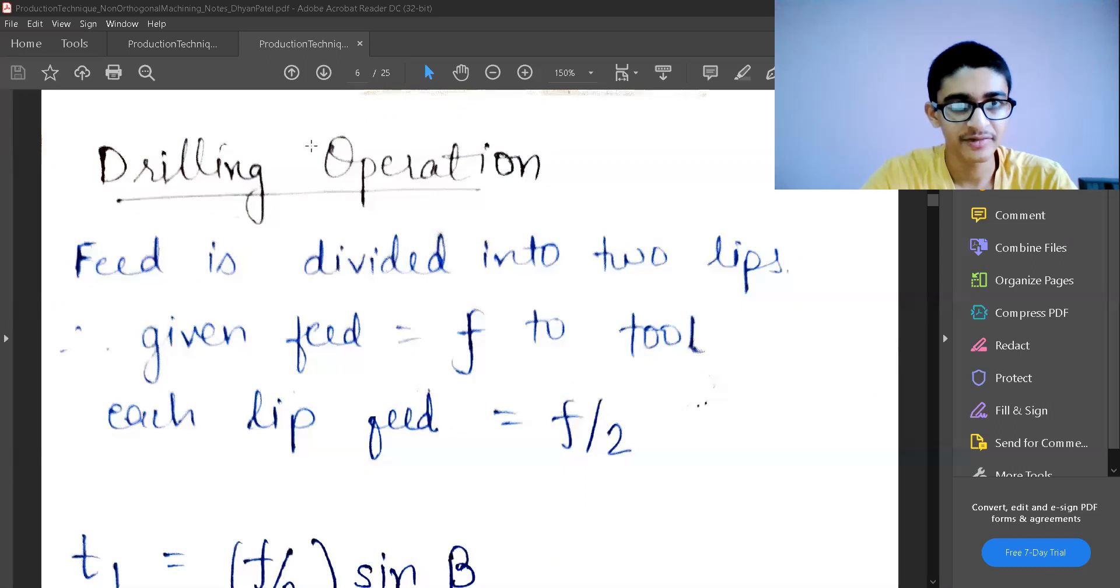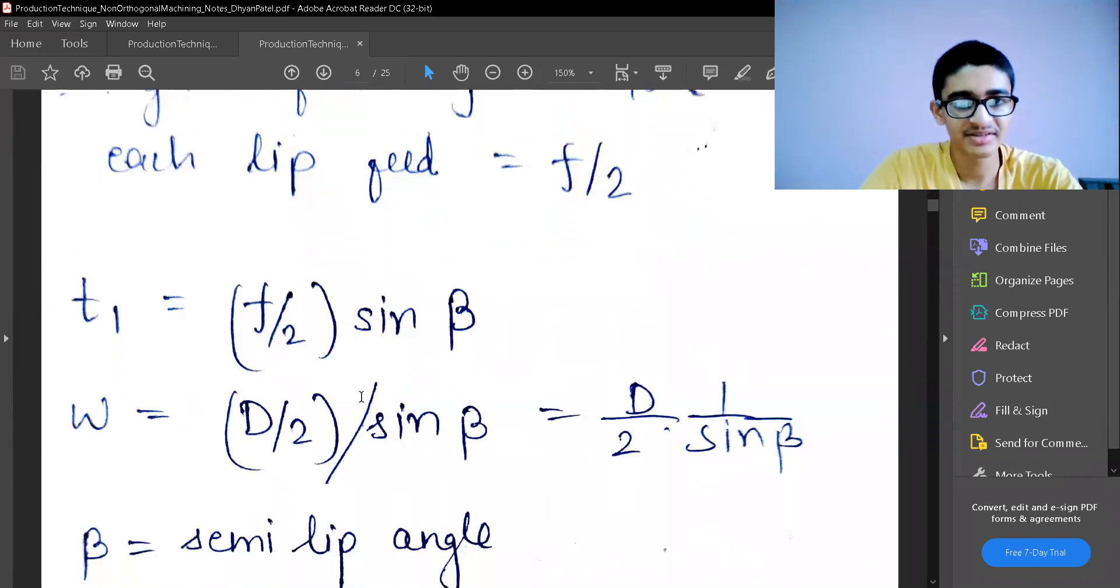That's the important change which is happening. All the other things will remain the same. Earlier we had t1, the uncut chip thickness is equal to f sine beta or cosine. The beta is defined as semi-lip angle. That is not the same as cutting edge angle or side cutting edge angle. We are using the semi-lip angle or the lip angle that is the angle of the tool. The tool geometry is giving us this, so the side cutting edge angle was also coming from the tool geometry itself.